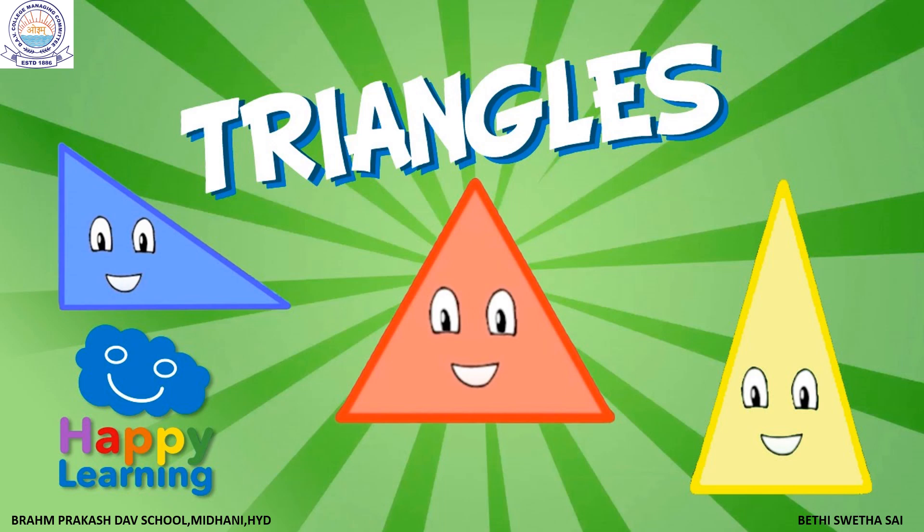Now on the screen you are seeing three different triangles. What is the difference between these three different triangles? In some triangles the sides are of different lengths, in one triangle the sides are of equal lengths, and the angles formed by the sides are different. Now let us learn about the types of triangles.